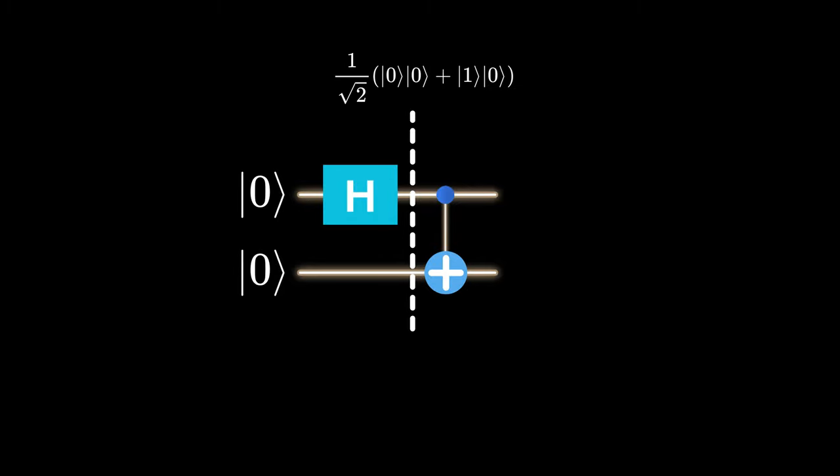After doing the multiplication, the state of the system is the superposition of 0, 0 and 1, 0. Now let's send it through the CNOT gate.